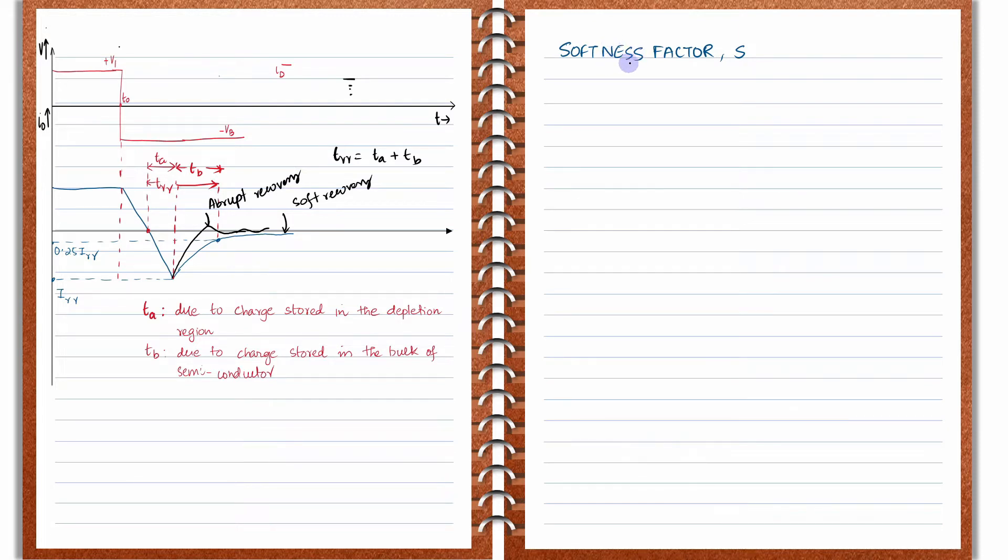In order to quantify these aspects of the recovery, there is a term called the softness factor. Basically, softness factor is a ratio. It is defined as the softness factor S is equal to TB divided by TA.